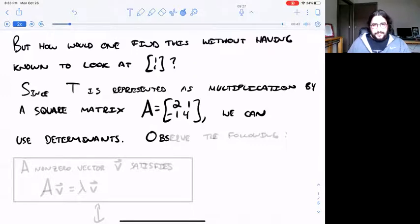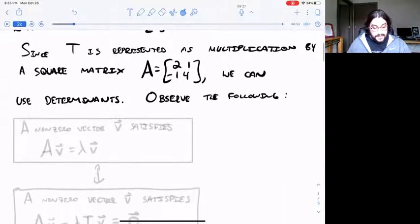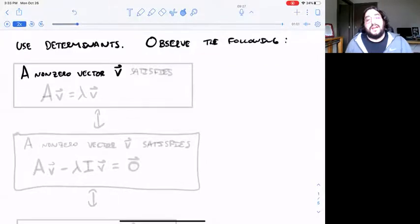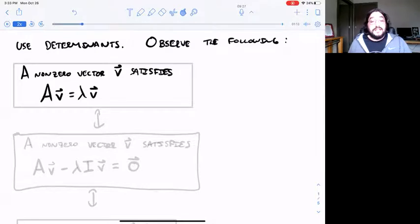Well, use a determinant. So observe, why are determinants helpful in this regard? Well imagine you have some matrix A that represents your linear transformation and suppose you have some non-zero vector v satisfying the eigenvector equation Av equals lambda v.